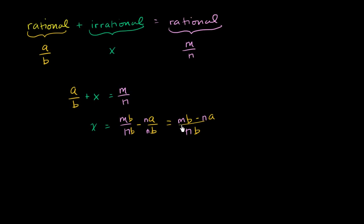So this denominator is clearly an integer. I have the product of two integers; that's going to be an integer. And then this numerator, mb is an integer, na is an integer. The difference of two integers, this whole thing is going to be an integer.